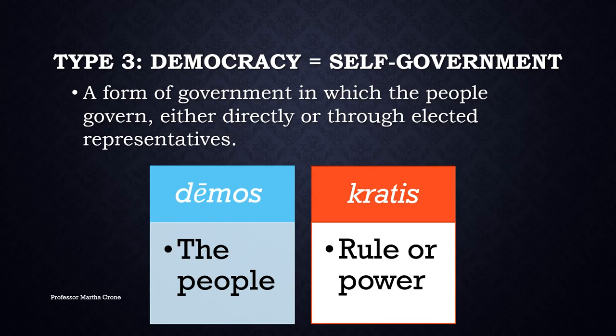The last type of government is one most of us are familiar with: democracy. The word democracy comes from two Greek roots — demos, which means people, and kratis, which means rule by. Thus, democracy means rule by the people.